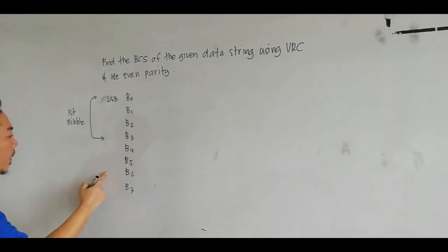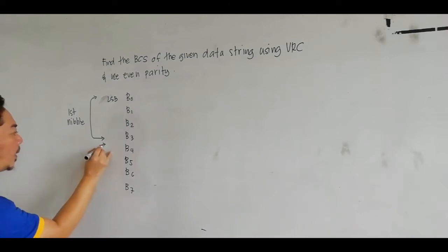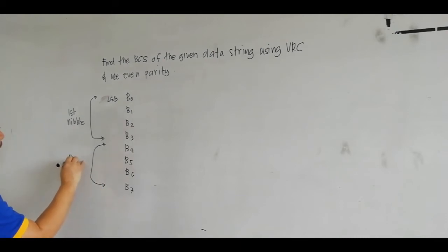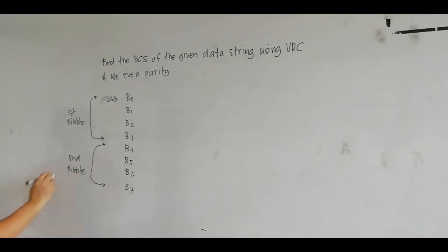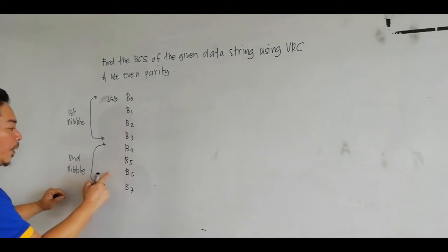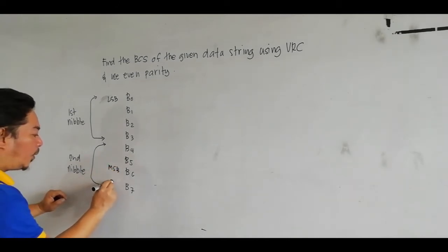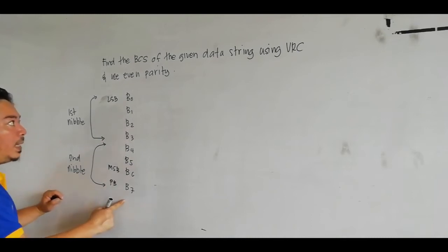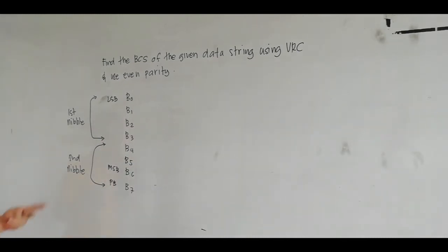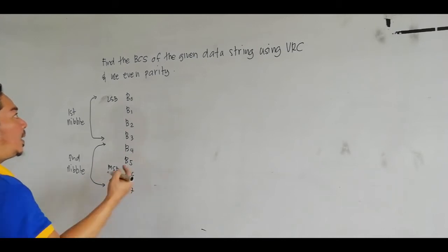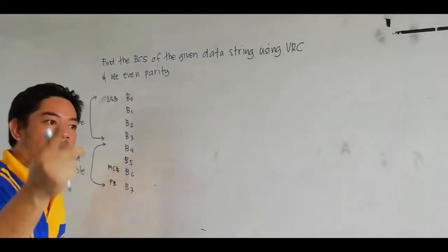The next group is your second nibble. So we have first nibble and second nibble. This is your most significant bit, and this is your parity bit (PB). Of course, the 7-bit code is an ASCII code.